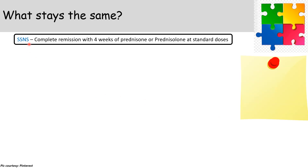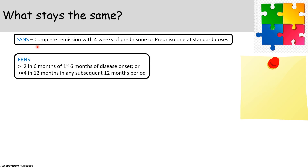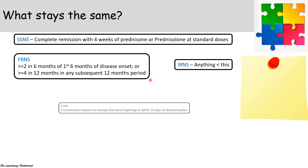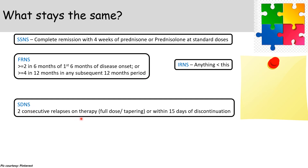Steroid-sensitive nephrotic syndrome is complete remission with four weeks of prednisone or prednisolone at standard doses. Frequently relapsing nephrotic syndrome is ≥2 relapses in the first six months of diagnosis or ≥4 relapses in any subsequent 12-month period. Infrequently relapsing NS is anything less than this frequency. Steroid-dependent NS is two consecutive relapses on therapy — either on full dose or on tapering steroids, or within 15 days of discontinuation. Notably, relapse occurring on full-dose corticosteroid should arguably be categorized as steroid-resistant rather than steroid-dependent.